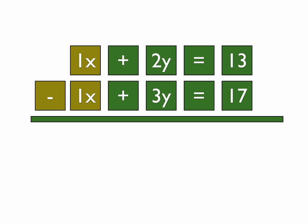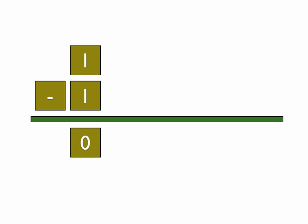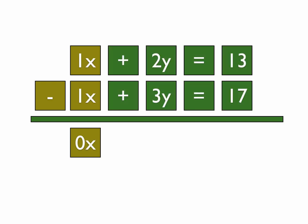So basically what we're doing is 1x minus 1x equals 0x, or you can just think of it as 1 minus 1 equals 0. So we have 1 minus 1 equals 0.